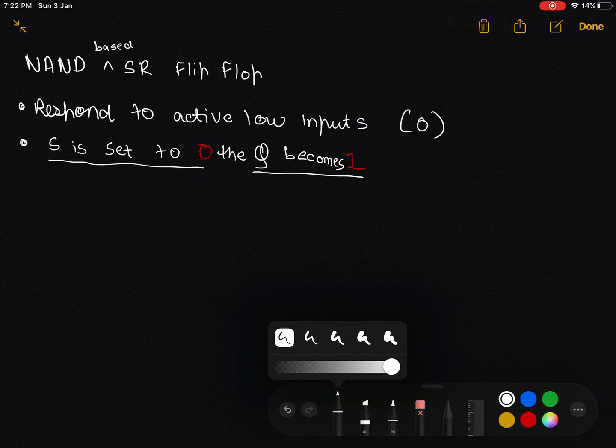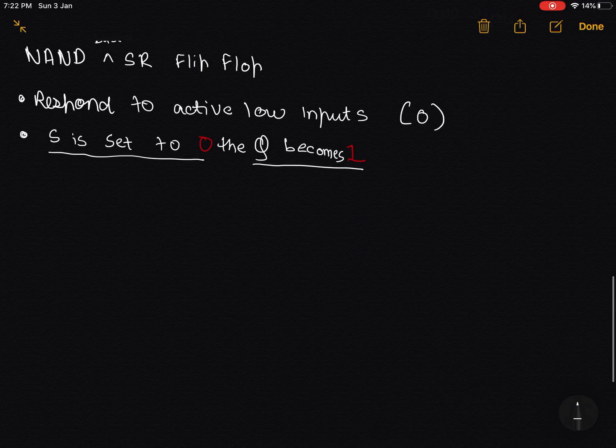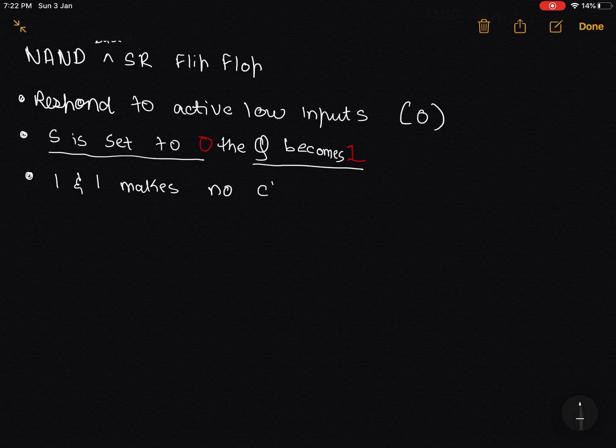NAND and SR flip-flops are just the opposite of each other. In this case, 1 and 1 makes no change at all. In NAND-based, 1 and 1 is a valid state. And 0 and 0 is unstable.